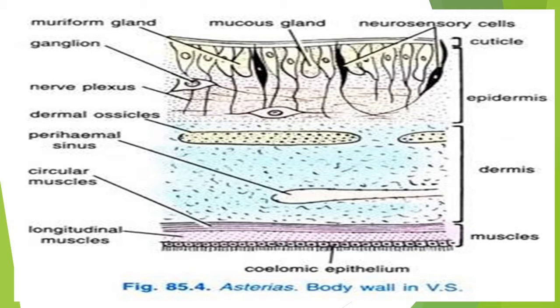If we look at the muscle layer, we can see the outer muscles. The outer muscles are longitudinal muscles. When you study the vertebrates, you can observe similarities with lower vertebrates.